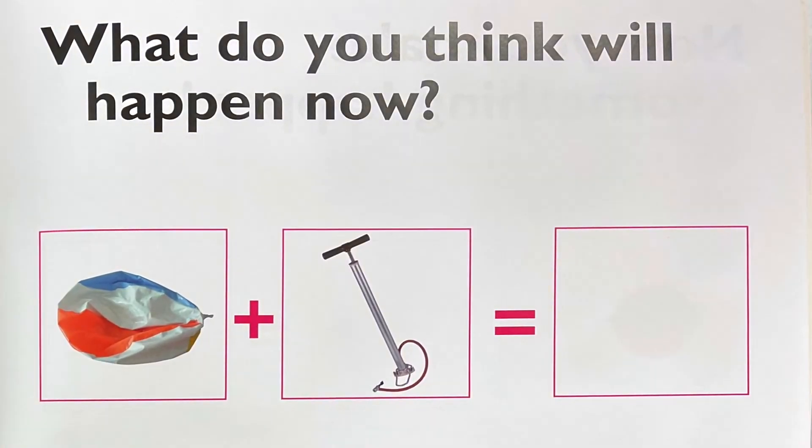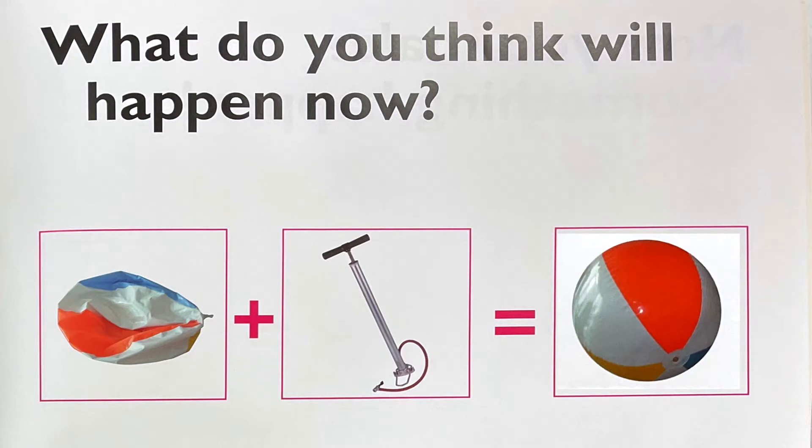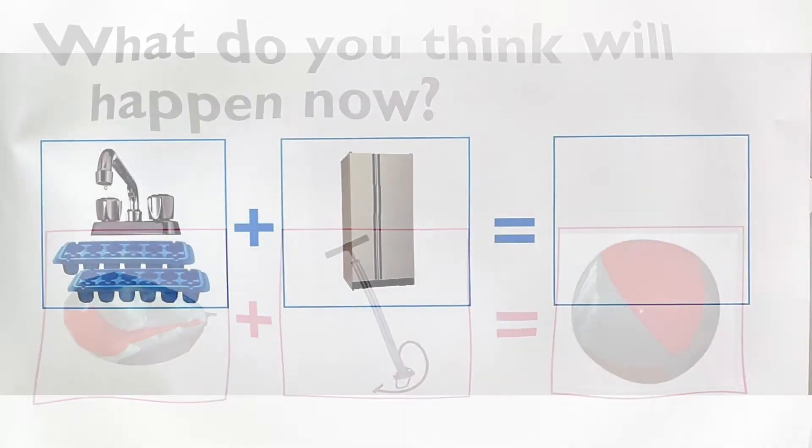you start with a beach ball with no air in it. Then you add a pump that puts air into the ball. What do you get? A beach ball that has been filled with air so that you can play with it. Now solve the other problems on your own.